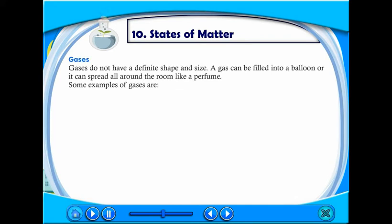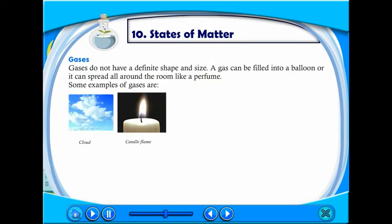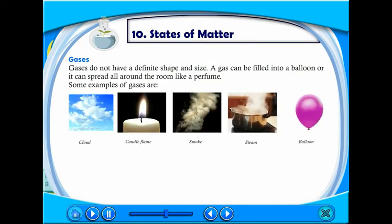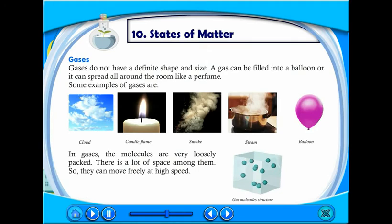Gases do not have a definite shape or size. A gas can be filled into a balloon or it can spread all around the room like a perfume. Some examples of gases are cloud, candle flame, smoke, steam, balloon. In gases, the molecules are very loosely packed. There is a lot of space among them, so they can move freely at high speed.